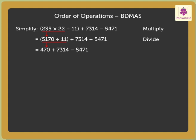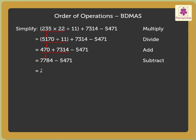Step 2: Now, again moving from left to right, we do addition and then subtraction as addition appears first. Adding 470 plus 7314, we get 7784, from which we subtract 5471 to get 2313. Thus, we get the answer as 2313.